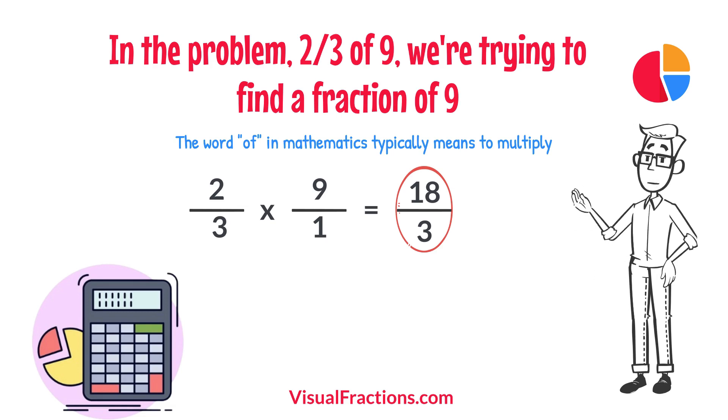So, 18 divided by three equals six. And there you have it. Two-thirds of nine is six.